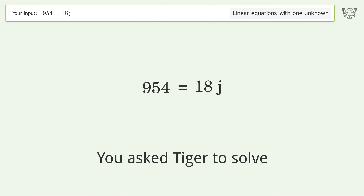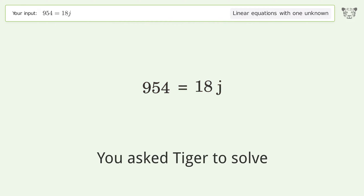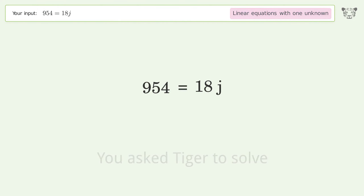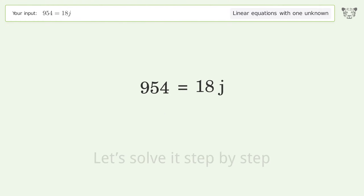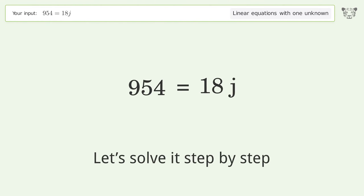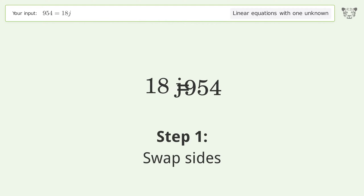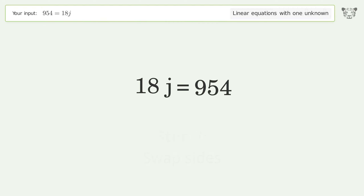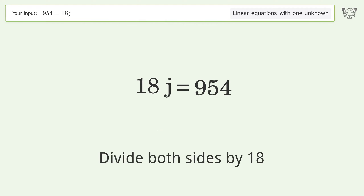Tiger was asked to solve this — it deals with linear equations with one unknown, and the final result is j equals 53. Let's solve it step by step. First, swap sides, then isolate j by dividing both sides by 18.